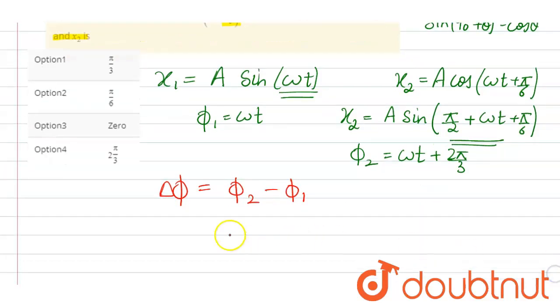So that means here omega t plus 2 pi by 3 minus omega t. Cancelling omega t with omega t, here we get 2 pi by 3. That means option 4 is correct.